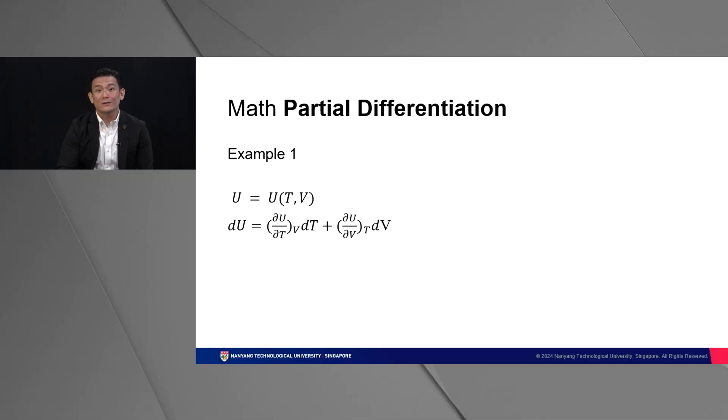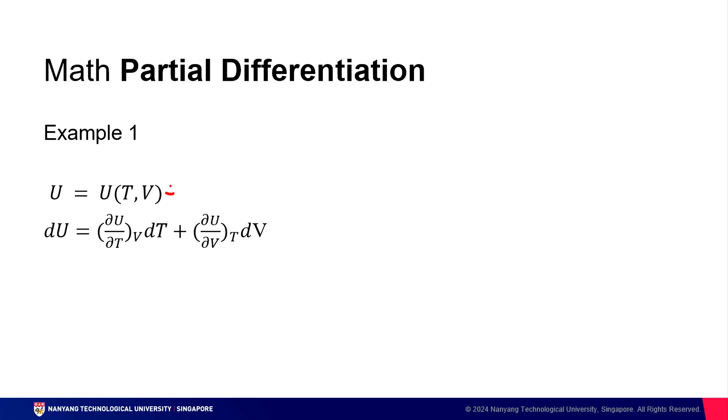So let's look at another example, this time instead of TPV, it's UTV. So consider this expression over here. In the same way that we differentiated one variable at a time, it can be rewritten as DU equals partial U over T, keeping V constant, multiplied by DT, plus partial U over partial V, keeping T constant, multiplied by DV. Notice one thing: the only change here is in the variable names. So you can apply the same operation to pretty much any set of variables that you have.